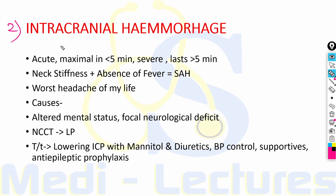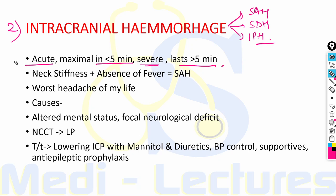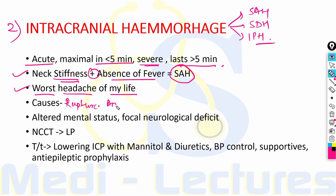The presence of neck stiffness along with absence of fever makes the diagnosis of subarachnoid hemorrhage in a patient with altered sensorium. Patients usually describe it as the worst headache of their life. Causes include ruptured aneurysm or AV malformation leading to subarachnoid hemorrhage, or rupture in intraparenchymal circulation leading to intraparenchymal hemorrhage. Patients present with altered mental status, focal neurological deficits, signs of meningeal irritation, and even coma.